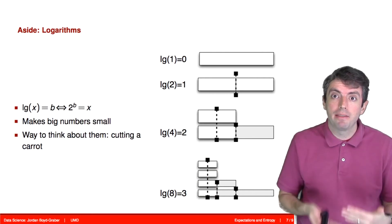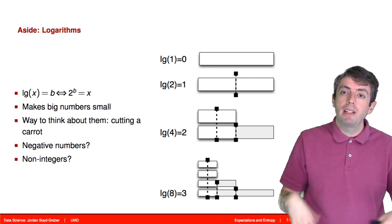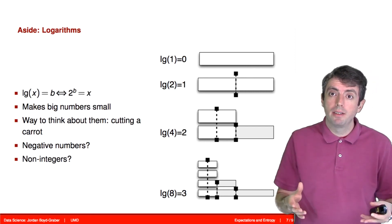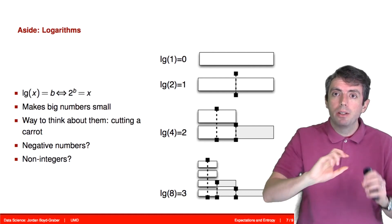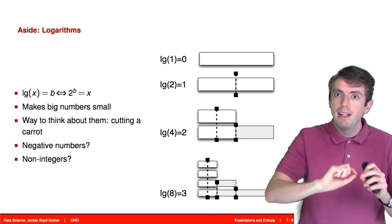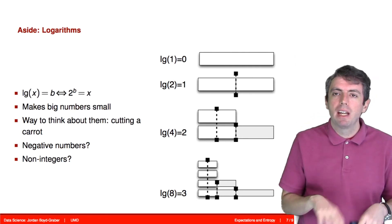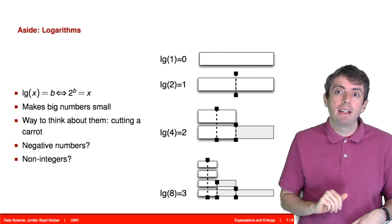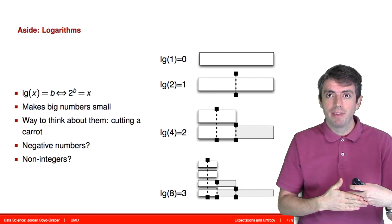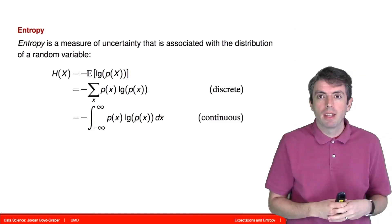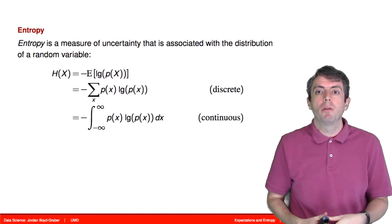Hopefully I refreshed your memory about what a logarithm is. Let's talk about how that fits into entropy. Hopefully you'll remember from your math class, or you'll believe me, that this definition of logarithms extends to non-integers as well. As you go from four to eight, you can take the logarithm in between, and it scales in a reasonable way. However, it does not apply to negative numbers. You can only take the logarithm of things greater than zero. Now we have all of the pieces that we need to define what entropy is.